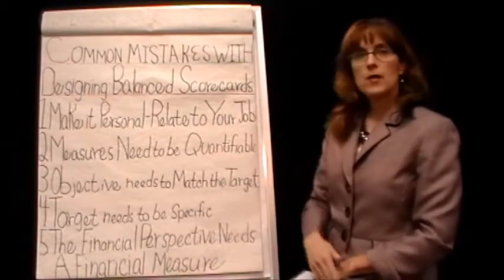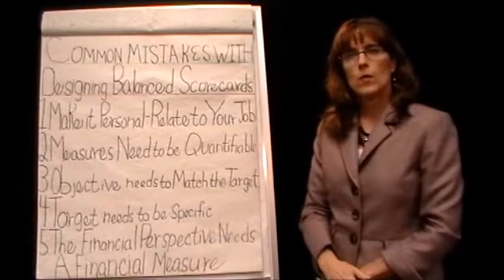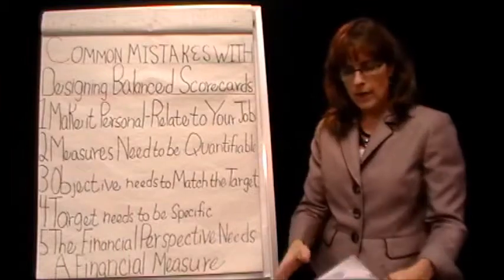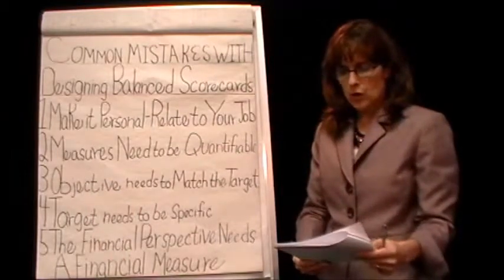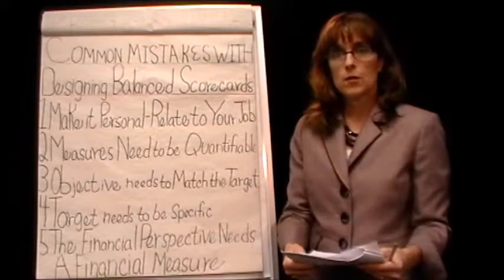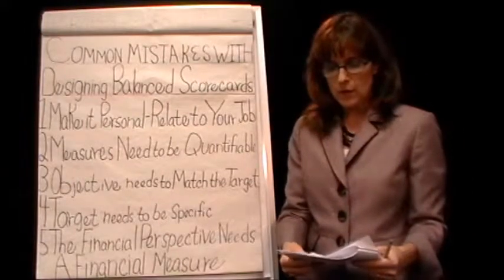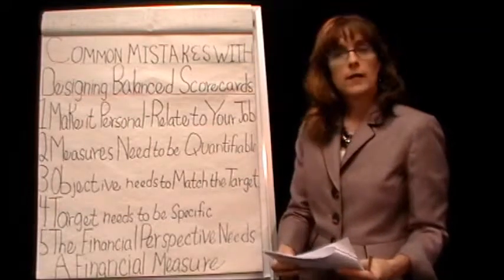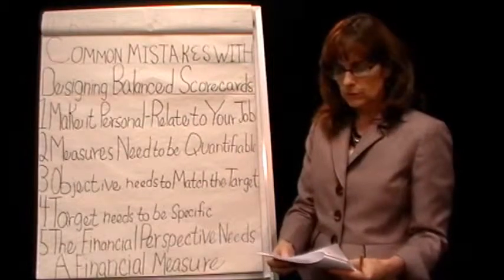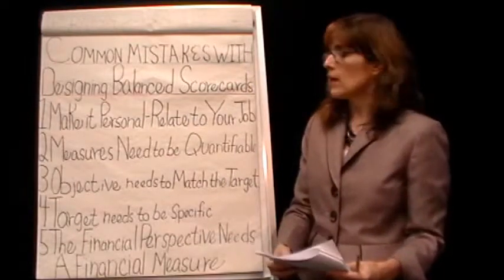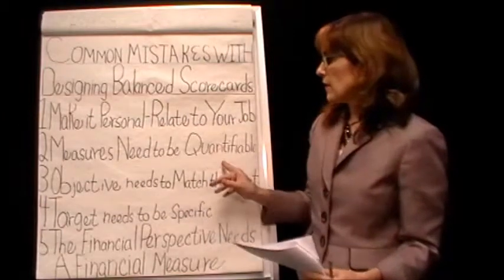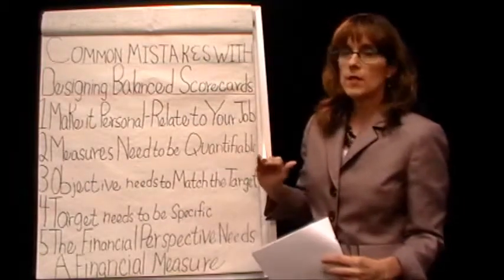The second mistake is that measures need to be quantifiable. Whatever you've picked for your measure, you have to figure out how to make it quantifiable. For example, in the Jane Doe example with East Central Hospital, her target for learning and growth was a completion date. So it can be a completion date, but it needs to be something that can be quantified — it doesn't have to be dollars and cents.